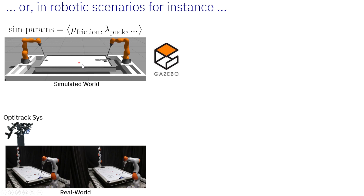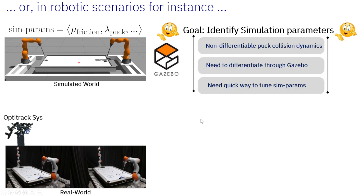There are different simulation parameters that need to be set very accurately to match the real world, so that we can transfer our behavior from the simulated world to the real world. Examples of those simulation parameters include friction parameters, puck behavioral parameters, and so forth. Our goal is to identify those simulation parameters so that we can take the behavior learned in simulation and get it to the real world.